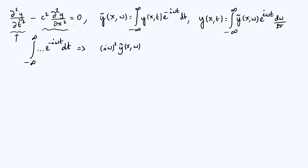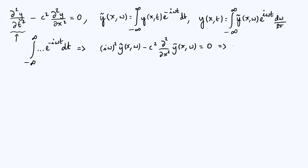The second term in our original PDE we can't use that trick with, because we took the temporal Fourier transform and that's a spatial derivative. So we're going to have to leave that second term as minus c squared times the second spatial derivative d²/dx² of y-tilde of x and omega. The right-hand side is still zero because the Fourier transform of zero is just zero. I'm going to use a double prime for my second spatial derivative.